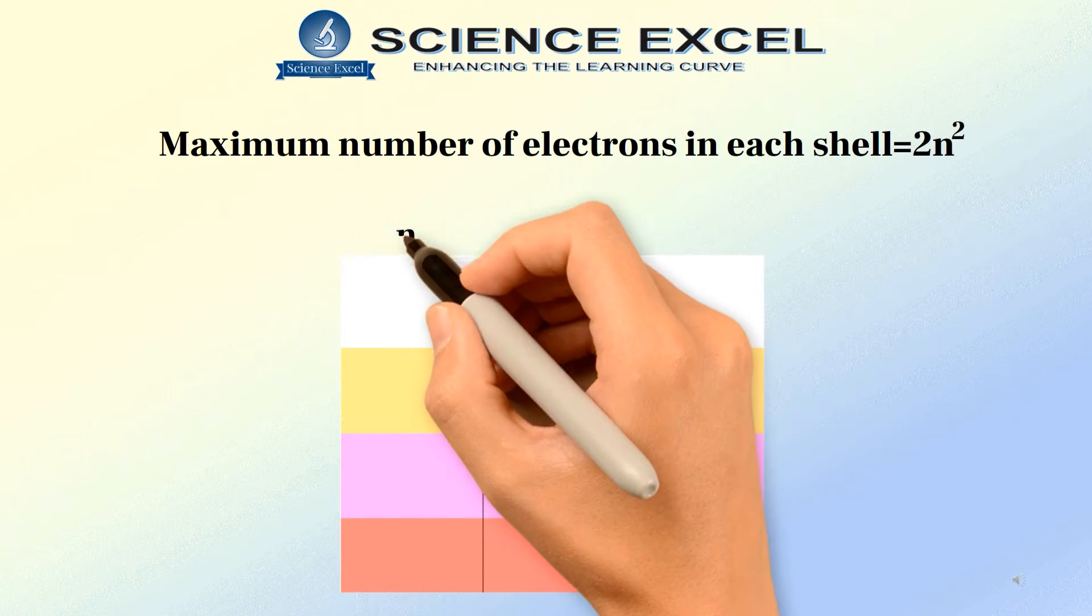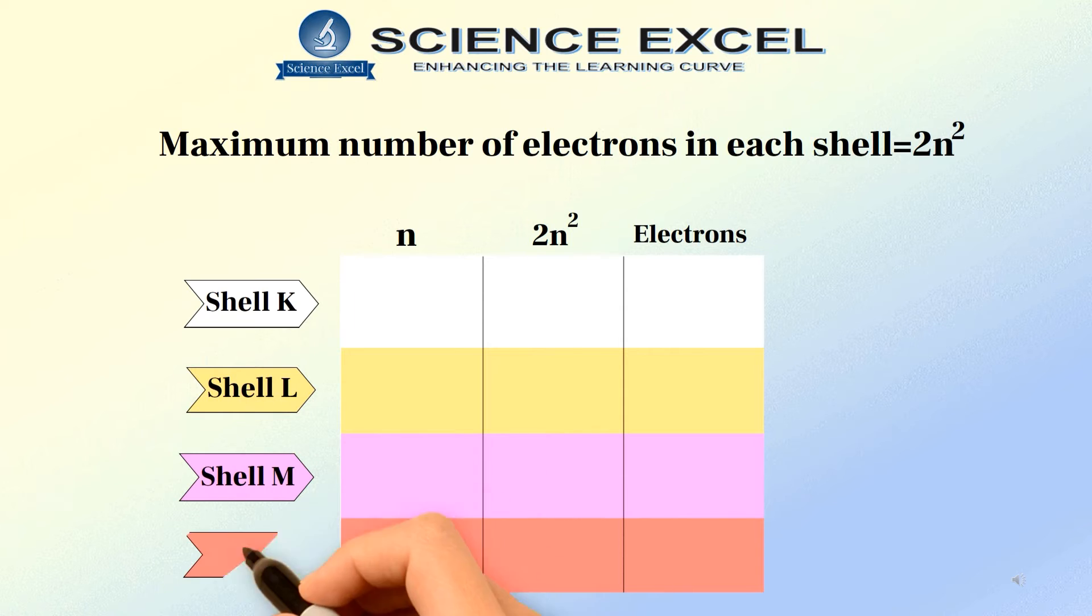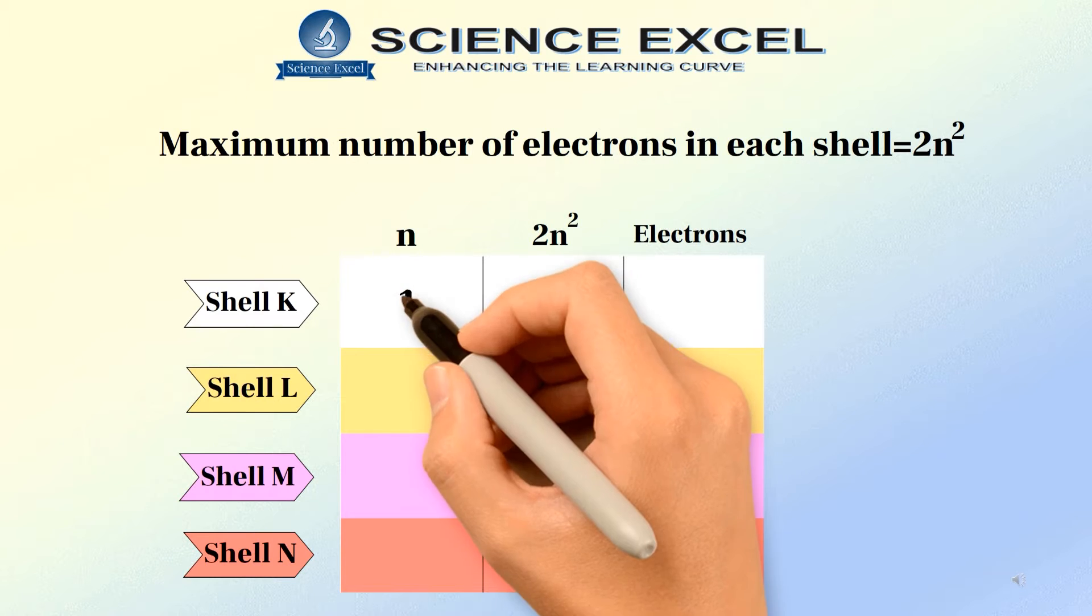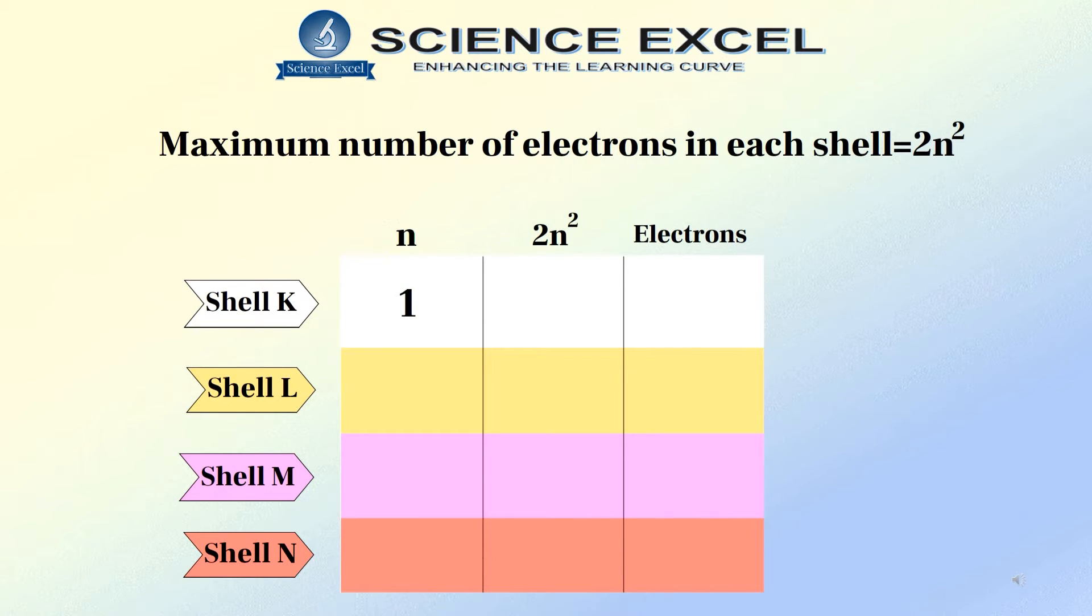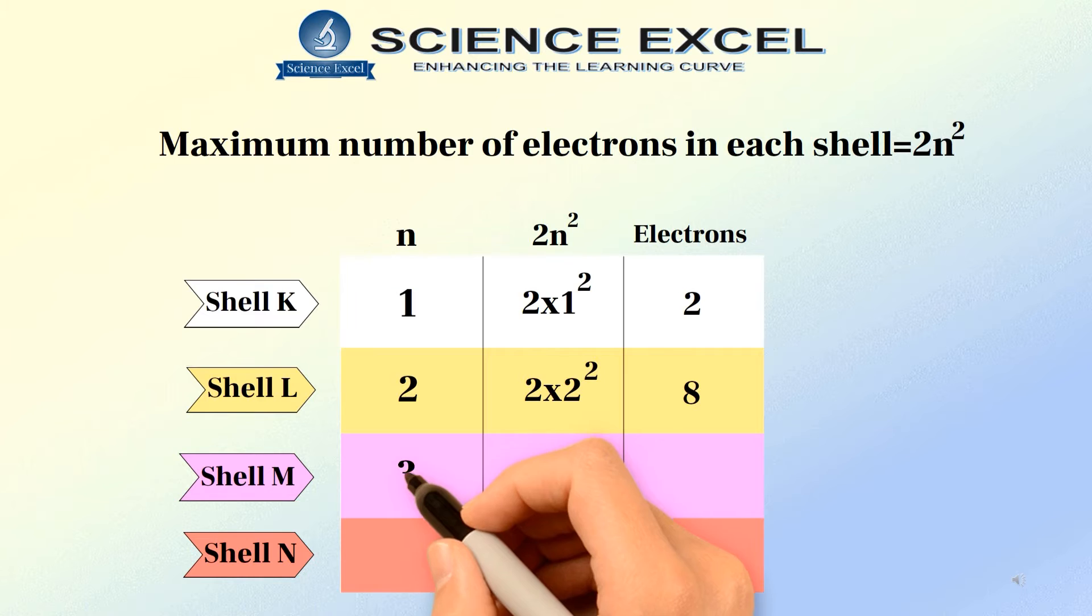For shell K, the number of a shell that is N is equal to 1. So the number of electrons is 2N². Now putting N equal to 1, we get 2 × 1² which is equal to 2. So in this way we can calculate the number of electrons for shell L which is 8, for shell M which is 18 and shell N which is 32.